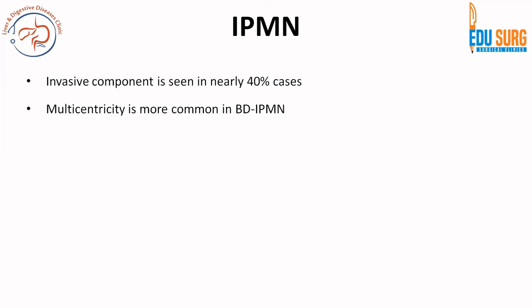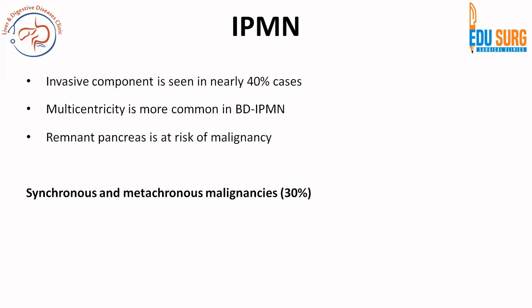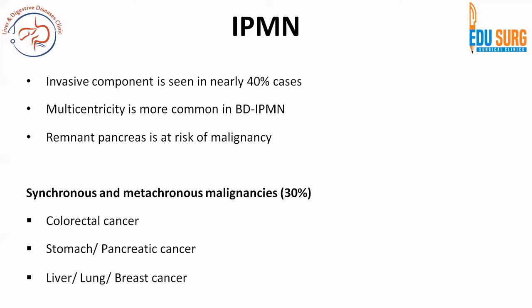Regarding malignancy, an invasive component is seen in nearly 40% of cases, and multicentric tumors are more common in branch duct IPMN. Where IPMN differs from MCN is that the remnant pancreas is at risk of malignancy because this is more of a field change — synchronous and metachronous malignancies occur in 30% of cases. Extrapancreatic malignancies are also common and can include colorectal cancer, stomach cancer, liver, lung, or breast cancer.